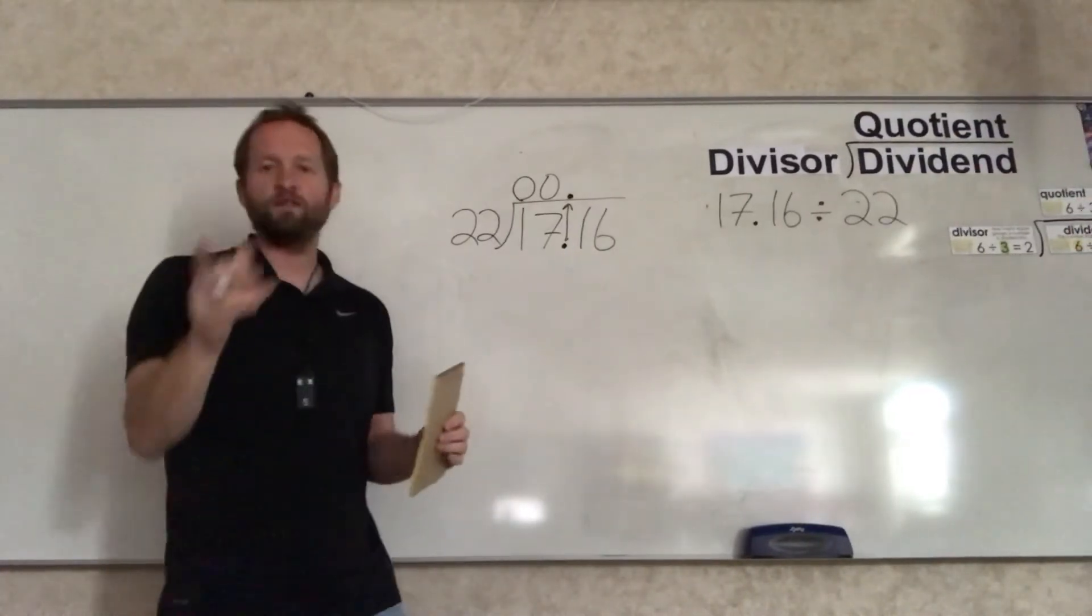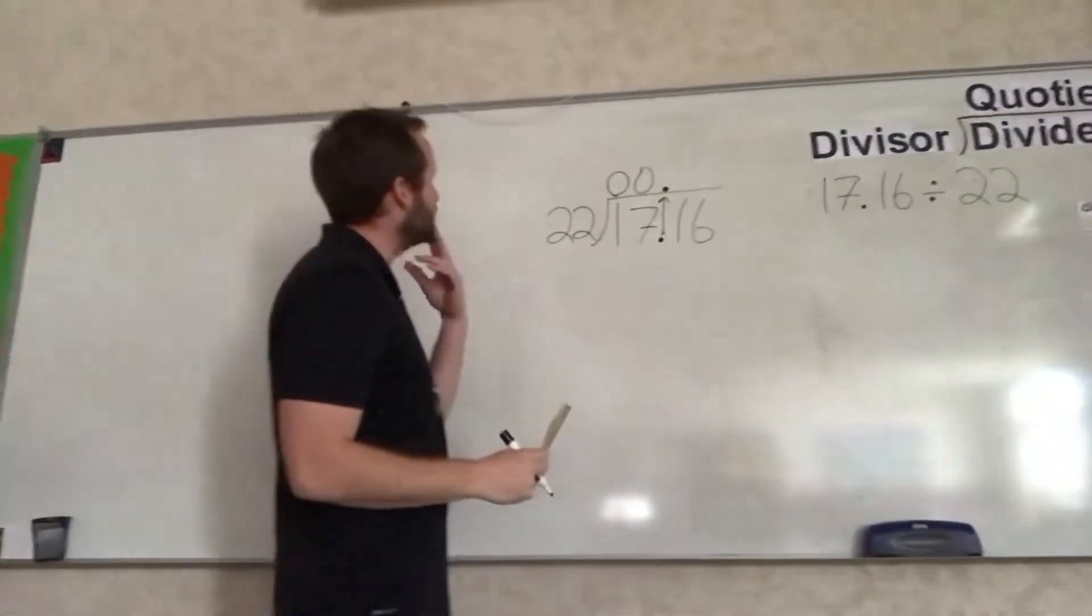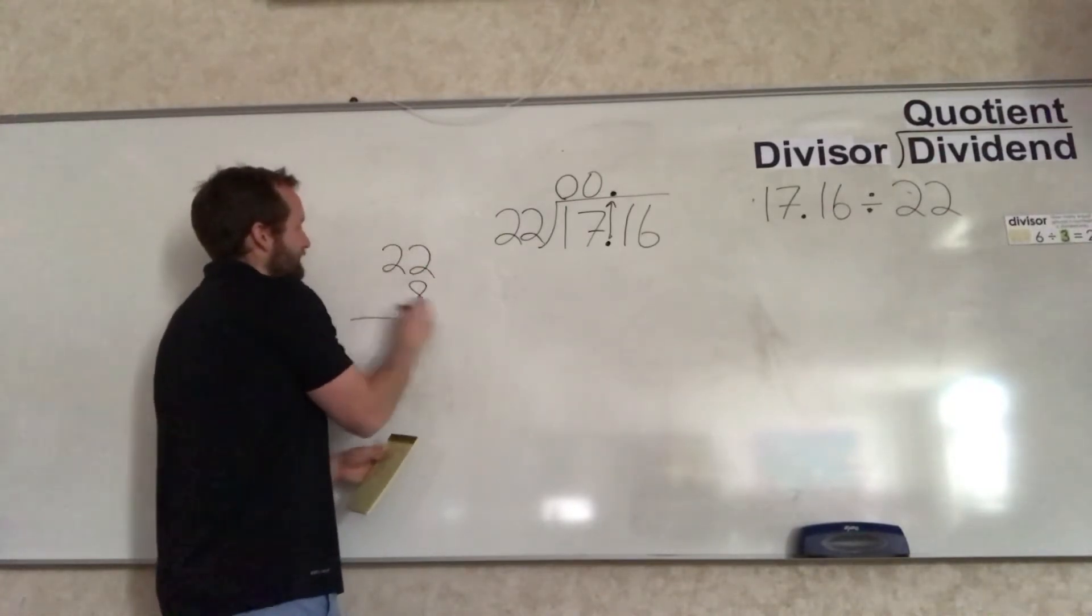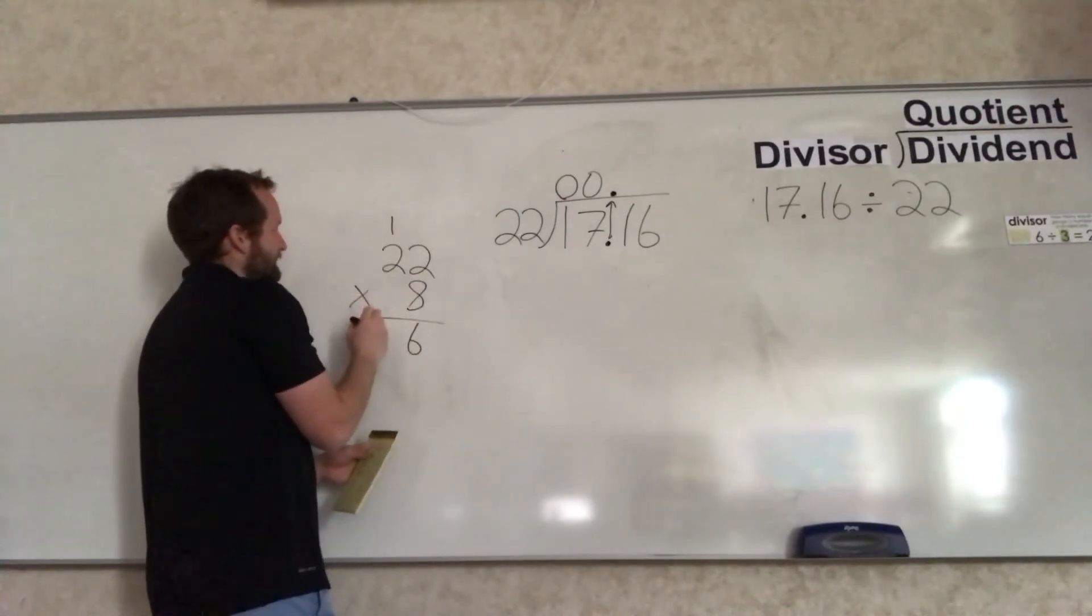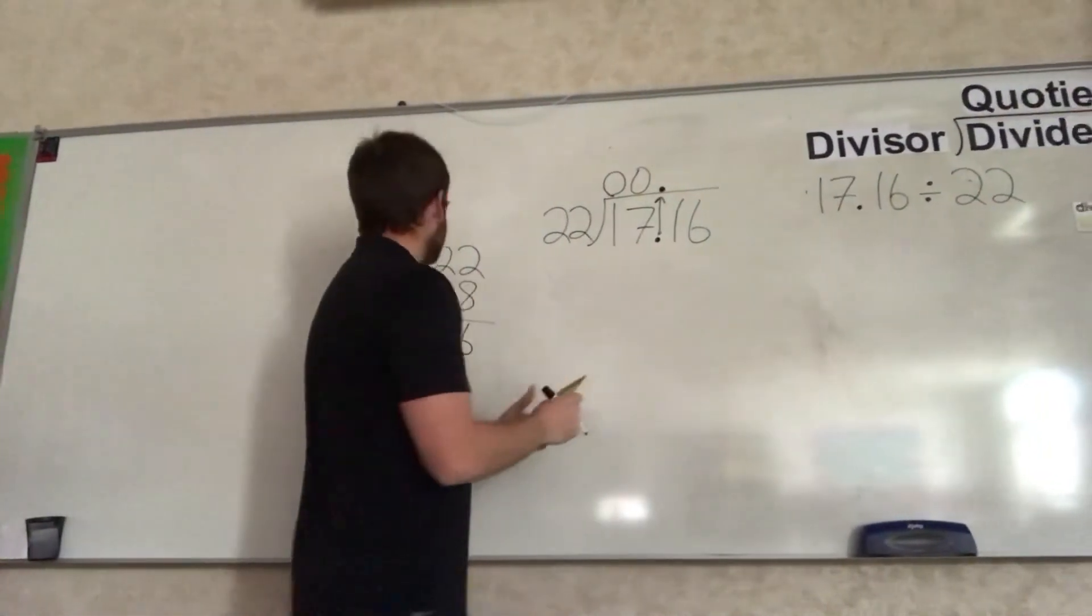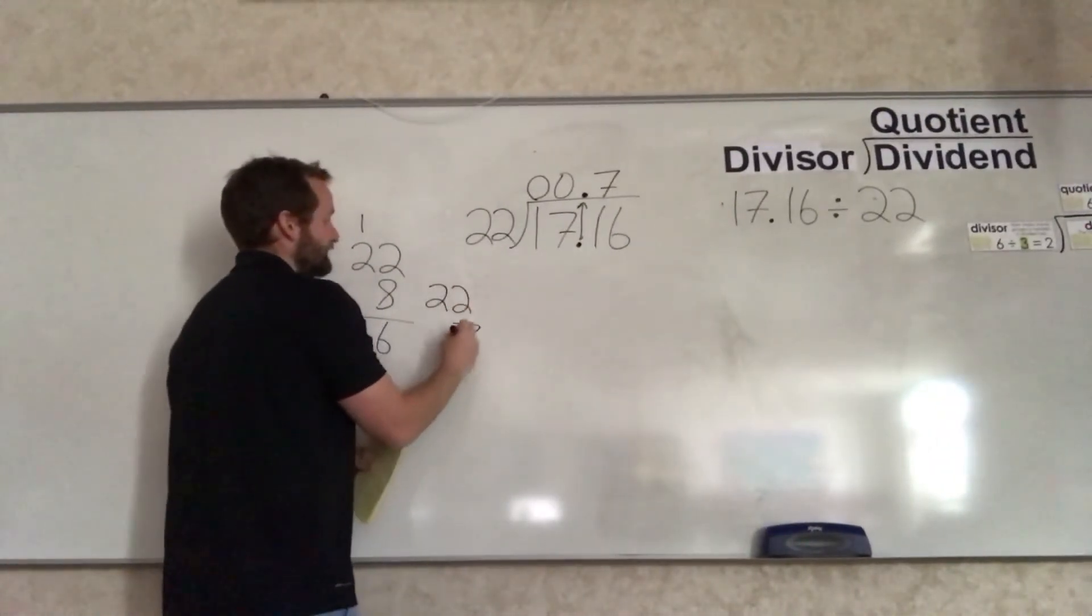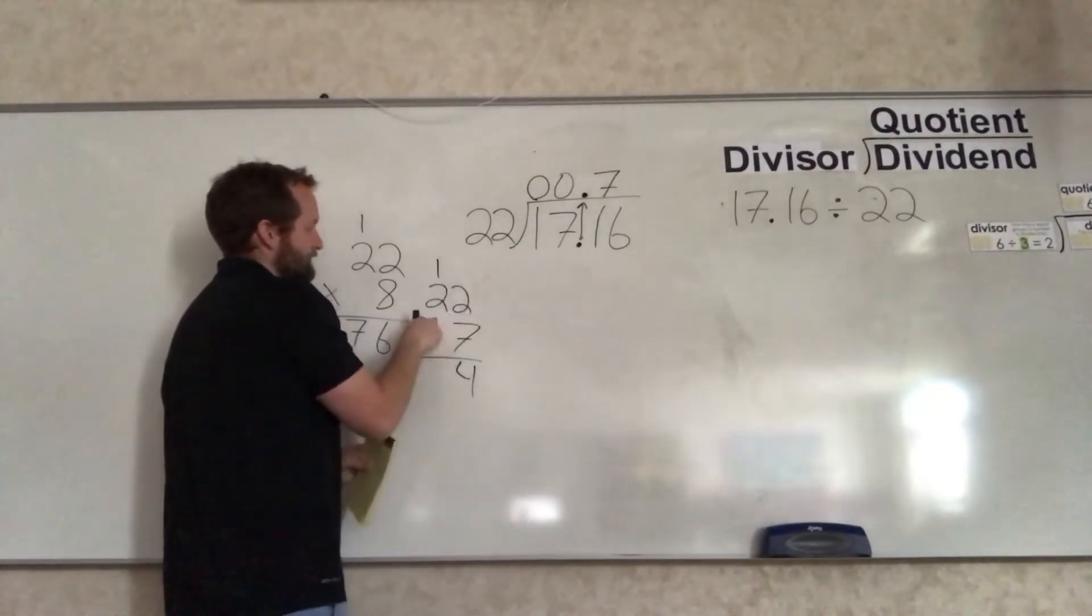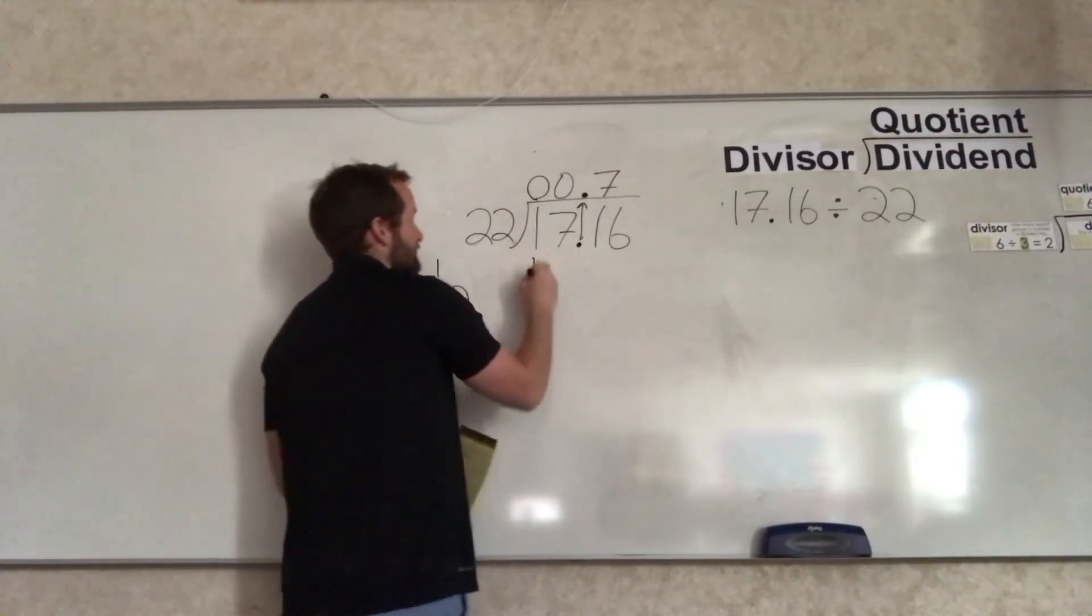How many times does 22 fit into 171? It does fit in. Let's find out how many times. Let's plug in some numbers and see. 22 times 8 - let's see what we get there. That's 176. That is just too big. So that means it's going to fit in 7 times. Let's find out what is 22 times 7. 7 times 2 is 14, 7 times 2 is 14 plus 1 is 15. That's 154. So 7 times 22 is 154.